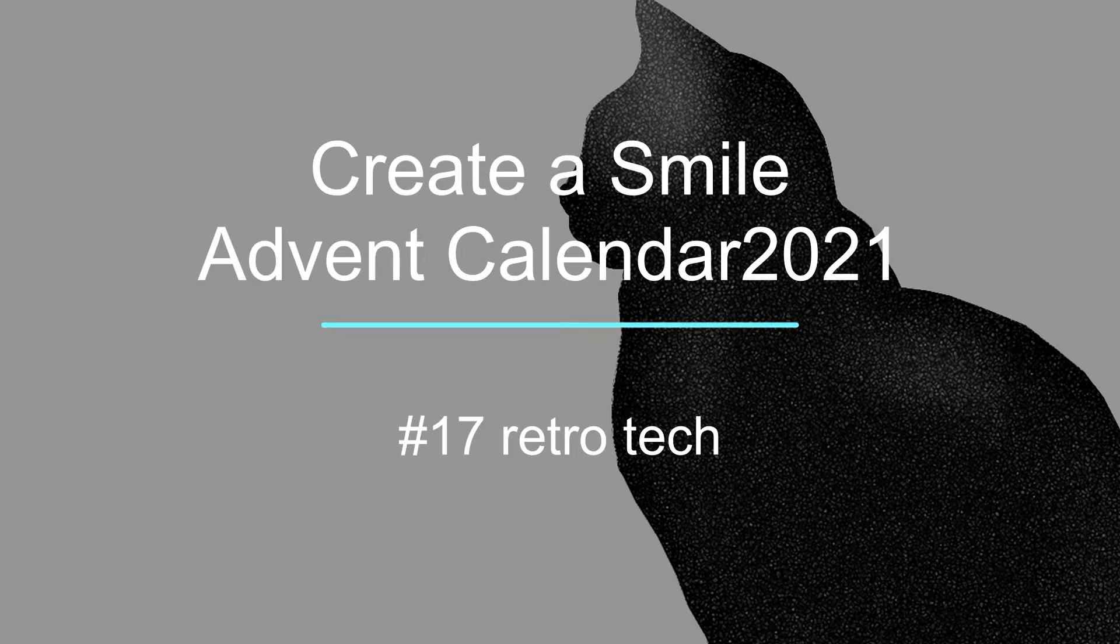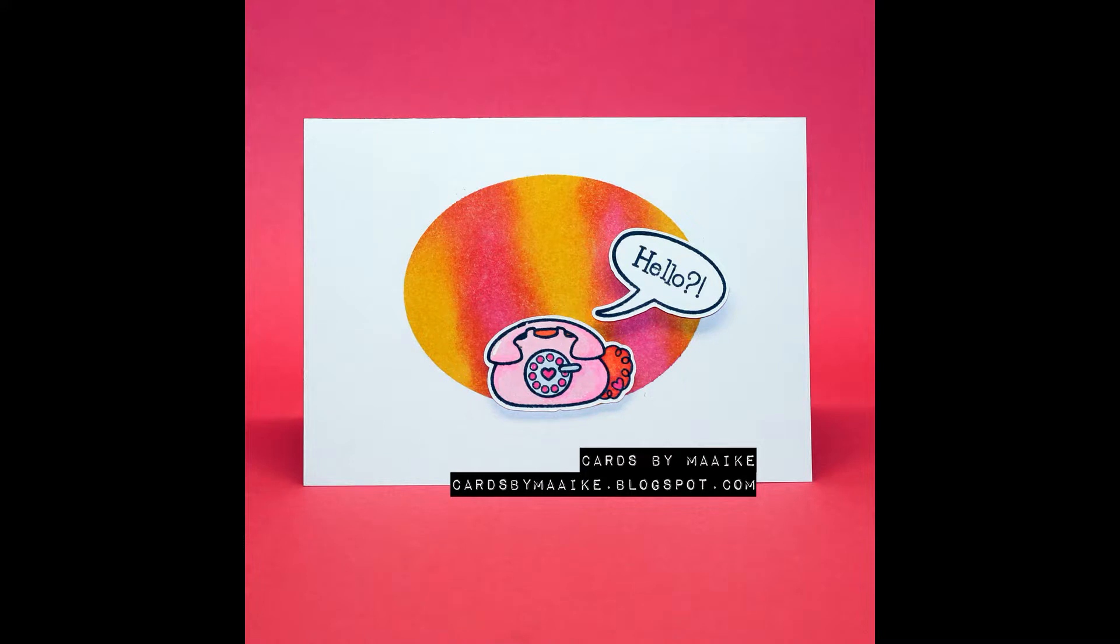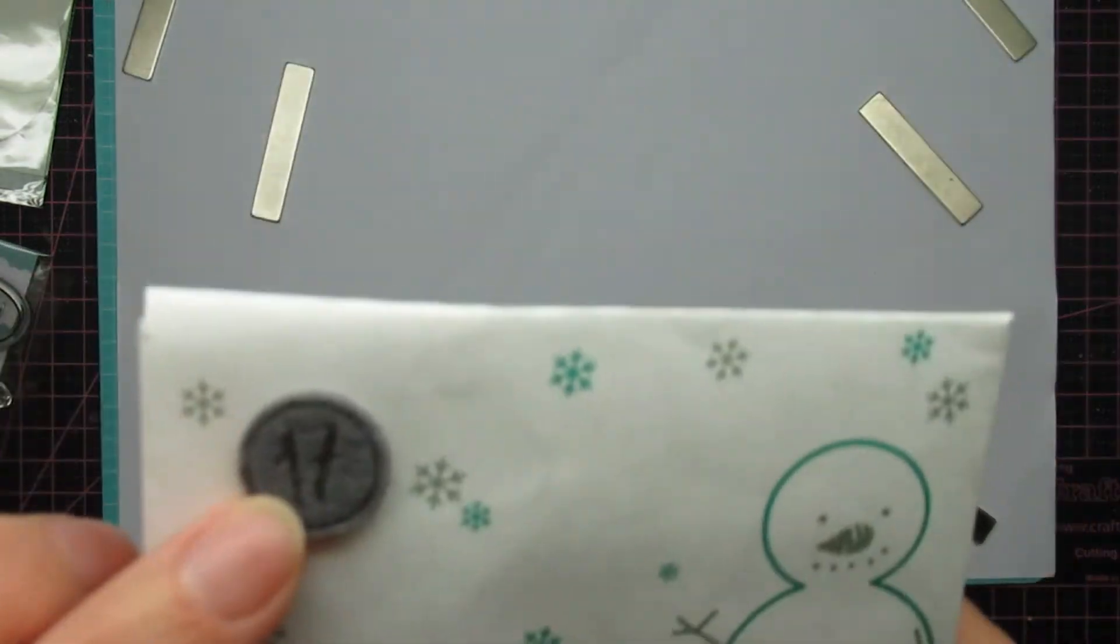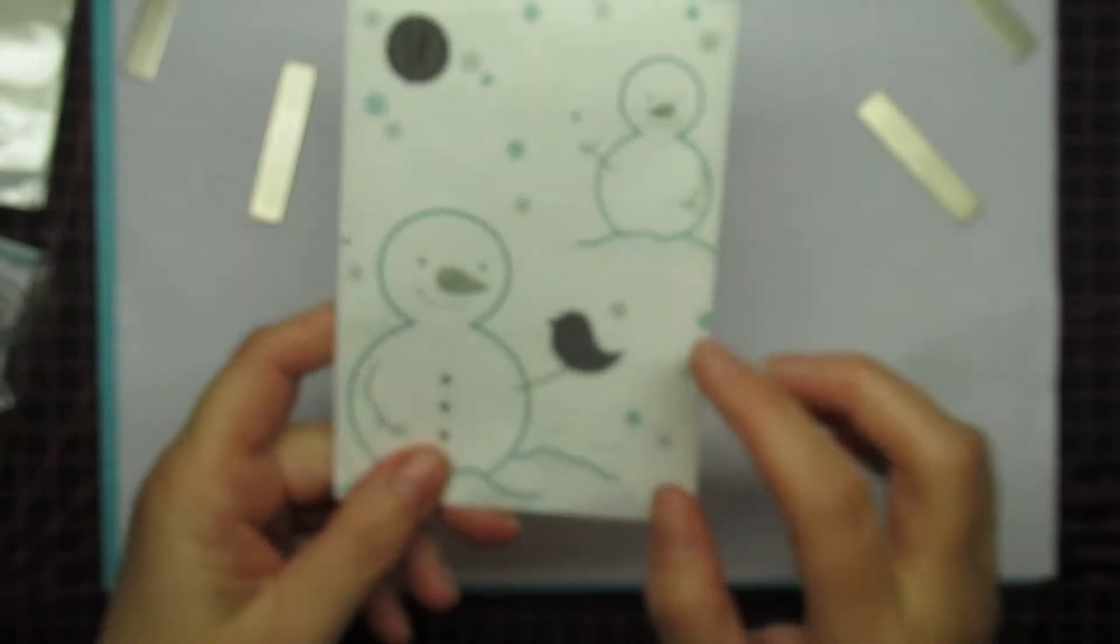Hi guys, it's Maike. I'm back with creators from my advent calendar number 17. I called it Retrotech, but the set is actually called On the Phone, which was too obvious. And you might have seen the thumbnail.